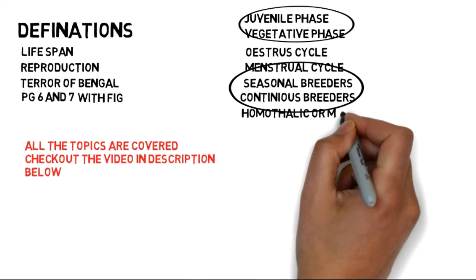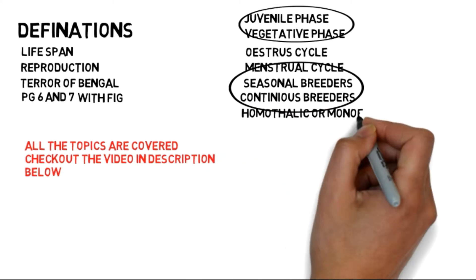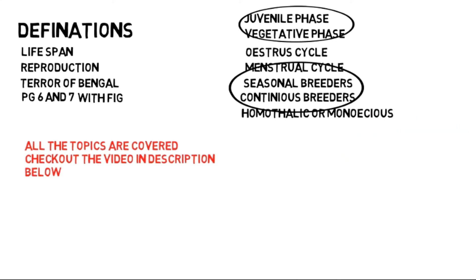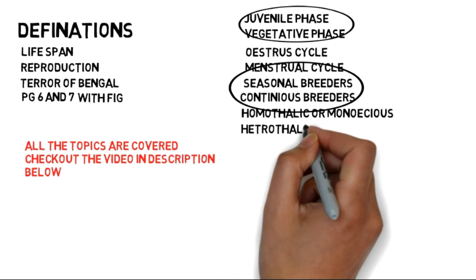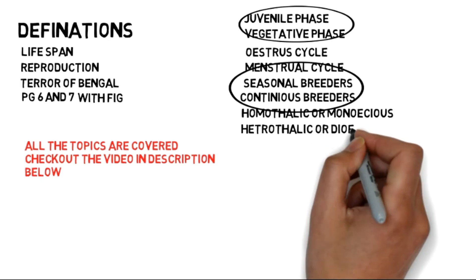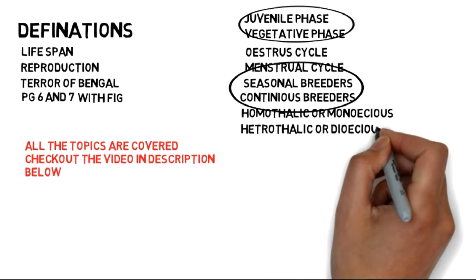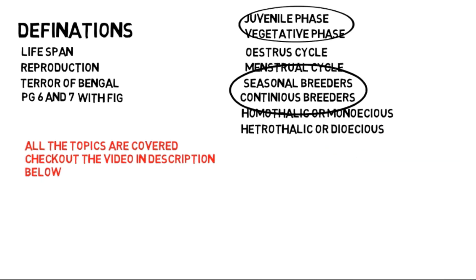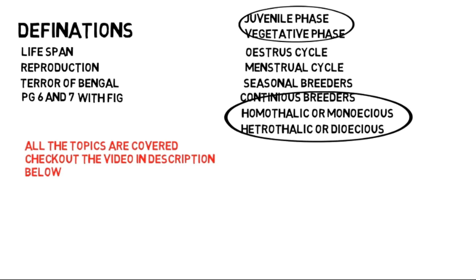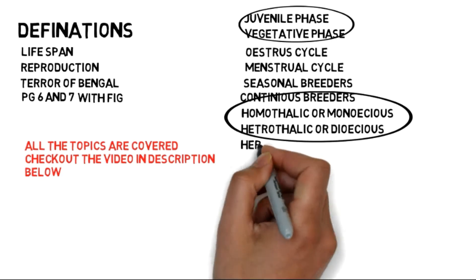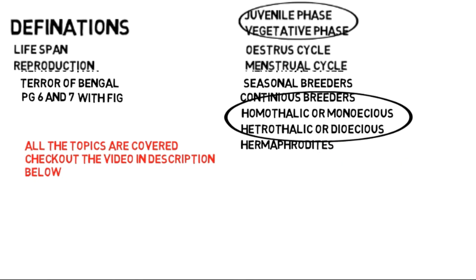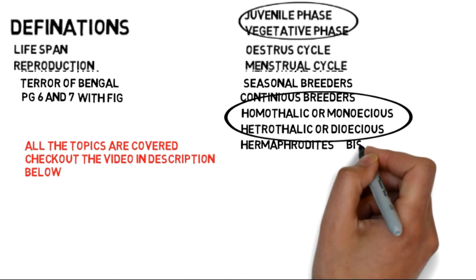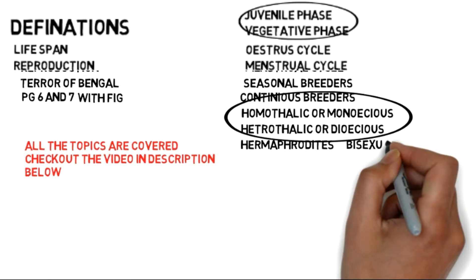Homothallic or monoecious, and heterothallic or dioecious: monoecious means one plant has both male and female parts, while dioecious means separate plants have male and female parts. Hermaphrodites are those animal species which are bisexual — meaning they possess both male and female reproductive organs.